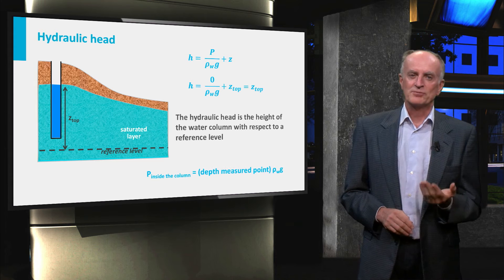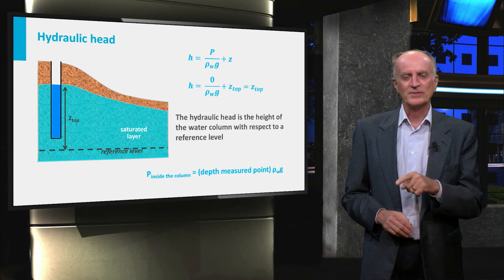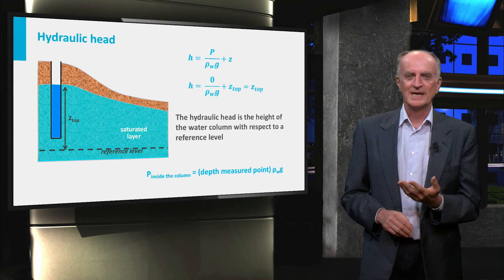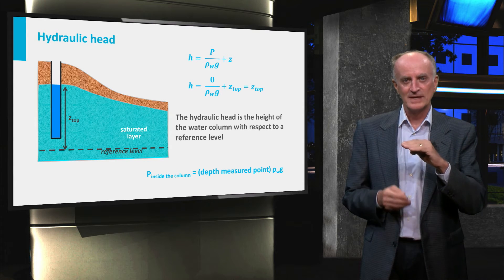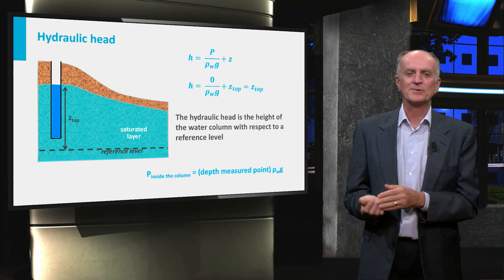One can also determine the pressure inside the water column into the well. At each point, it will be equal to the depth of the point with respect to the water level times water density and gravity acceleration.